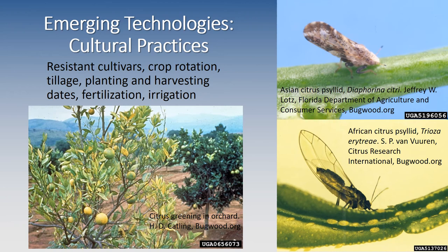Cultural practices can play a very important role in pest management as well. These include resistant cultivars, crop rotation, tillage, planting and harvesting date alteration, fertilization, and irrigation. On the left we have an image of a citrus orchard exhibiting citrus greening, and on the right we have the two psyllids that vector citrus greening — the Asian citrus psyllid and the African citrus psyllid. This is an invasive pest that we did not get ahead of, and it has devastated the Florida citrus industry.